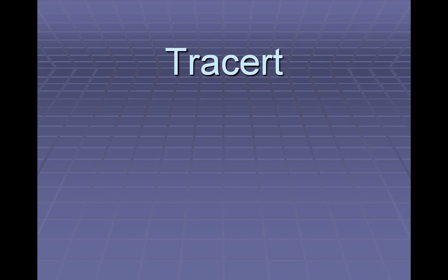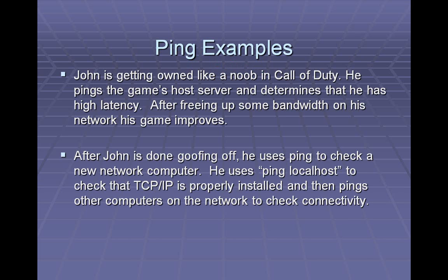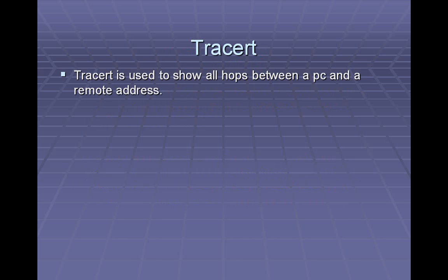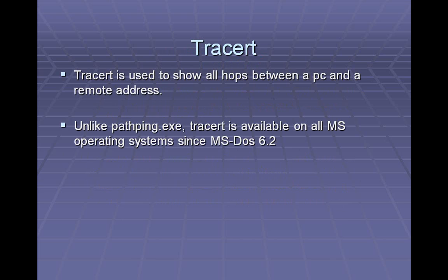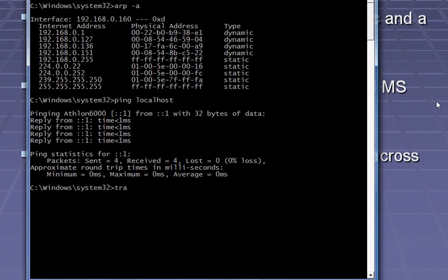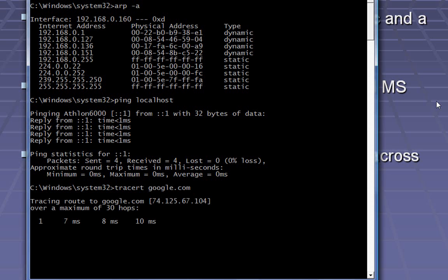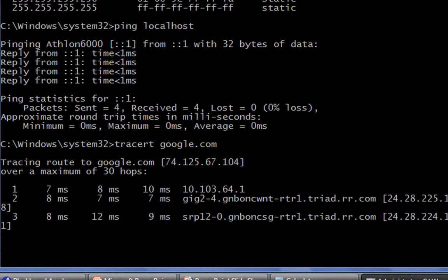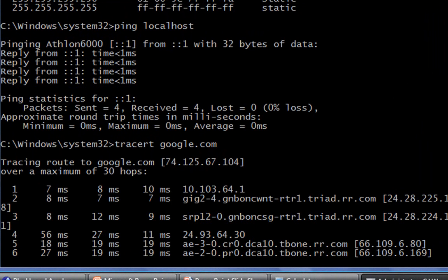The last tool we're going to look at is TraceRoute. TraceRoute is a tool that allows you to show all the hops between one location and another, either on the internet or on a local network. Unlike other tools, TraceRoute has been around since the very beginning — it goes all the way back to MS-DOS 6.2. This command is useful for tracing packets across a complex network. Let's do a TraceRoute to Google.com and see how many hops we have from my location to theirs. It'll take a second because it's resolving the names of the IP addresses for all the hops along the way, and it reports how many milliseconds it's taking to respond for each one.